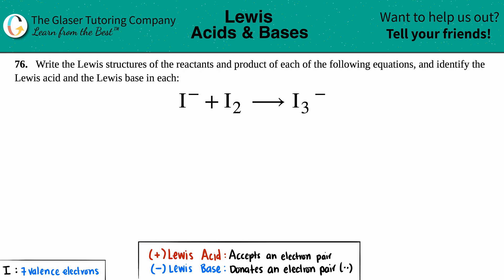Problem 76: write the Lewis structures of the reactants and the product of each of the following equations and identify the Lewis acid and the Lewis base in each. Writing the Lewis structures is going to be a review — we have a whole chapter on this channel designated to drawing Lewis structures. The new thing here is just taking those Lewis structures and identifying the Lewis acid and the Lewis base.